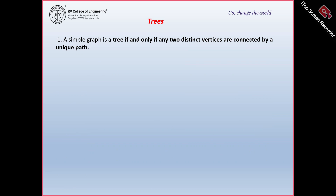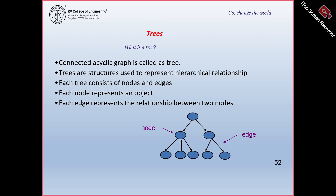A simple graph is a tree if and only if any two distinct vertices are connected by a unique path. For example, if you consider from one node to another node, there is only one path — there is no other unique path. So if you have a unique path between any two vertices, then it is called a tree.